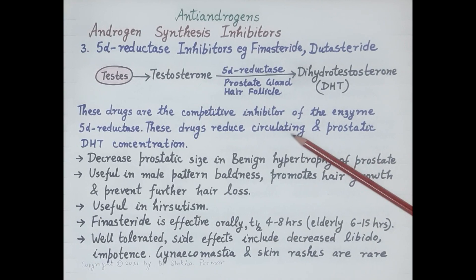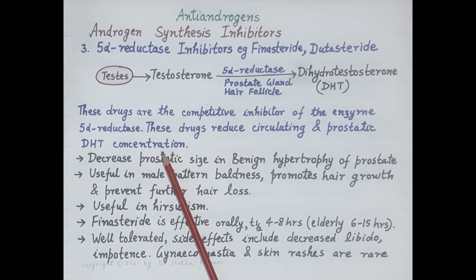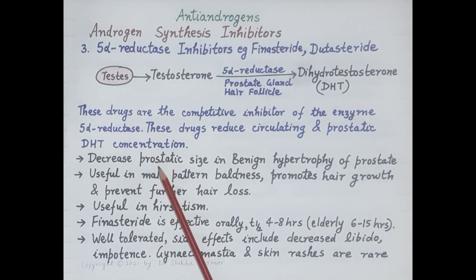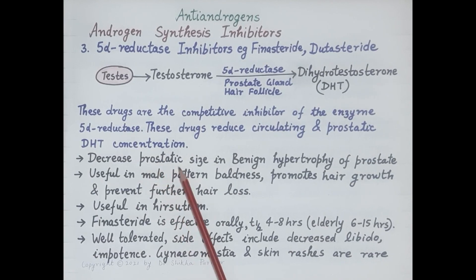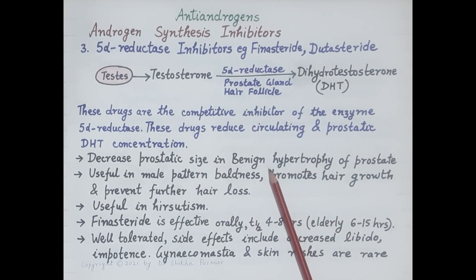5-alpha reductase inhibitors reduce circulating as well as prostatic concentrations of dihydrotestosterone. Since dihydrotestosterone stimulates growth of the prostate gland, these inhibitors decrease prostatic size in benign hypertrophy of the prostate.